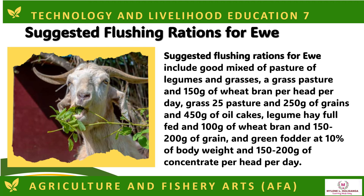Suggested flushing rations for ewes include a good mixed pasture of legumes and grasses, a grass pasture and 150 grams of wheat bran per head per day, grass pasture and 250 grams of grains and 450 grams of oil cakes, legume hay full-fed and 100 grams of wheat bran and 150 to 200 grams of grain, and green fodder at 10% of body weight and 150 to 200 grams of concentrate per head per day.